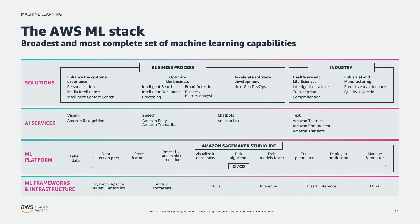If possible though, we'd prefer you didn't build models at all. We'd really like you to leverage our pre-built AI services to accelerate the time it takes to get solutions into production. At the AI services level, we have Amazon Rekognition, our computer vision solution that does content moderation, object detection, facial recognition, and facial comparison — all pre-built, out of the box. You can just take that with an API call and integrate it into your solutions with no machine learning experience required. We also have Polly and Translate for speech-to-text and text-to-speech, and Lex for chatbots.